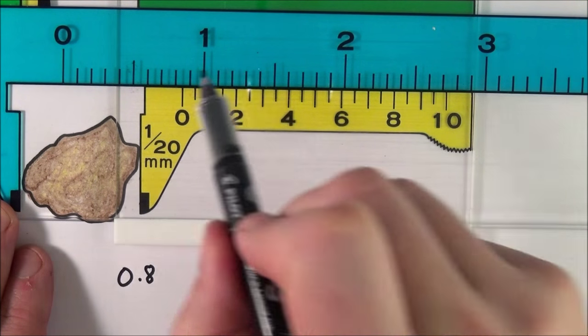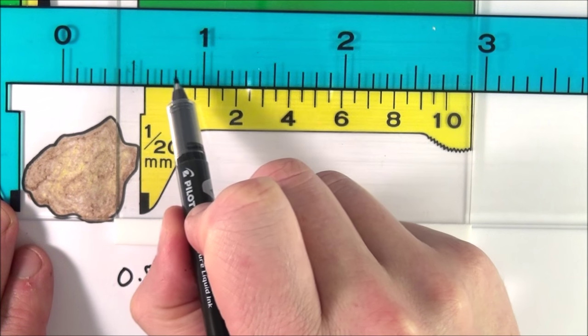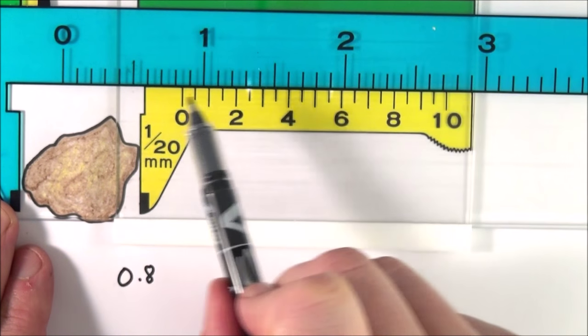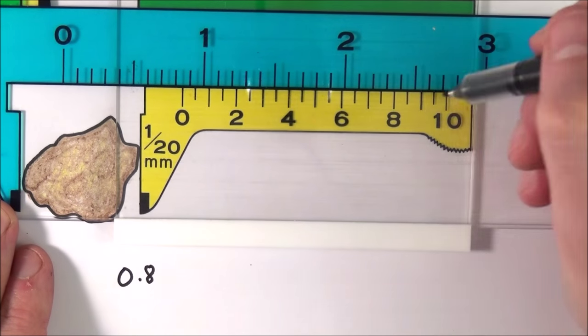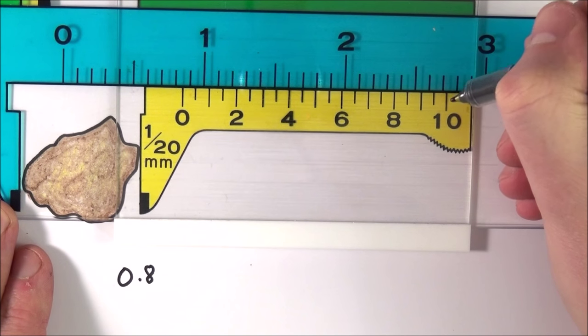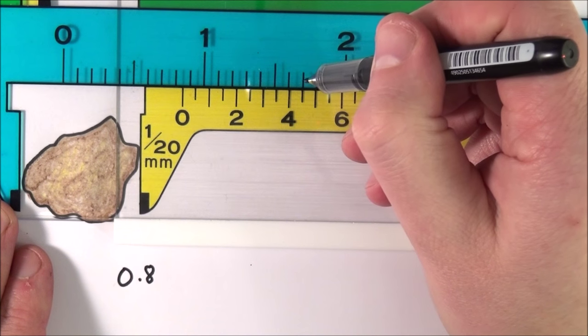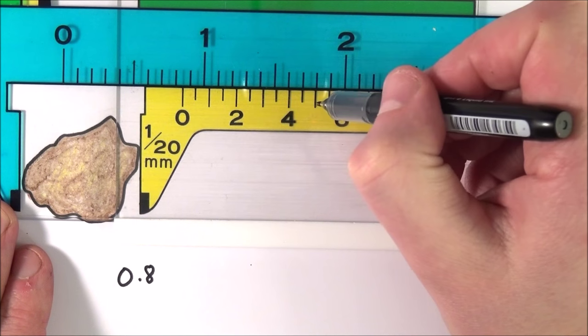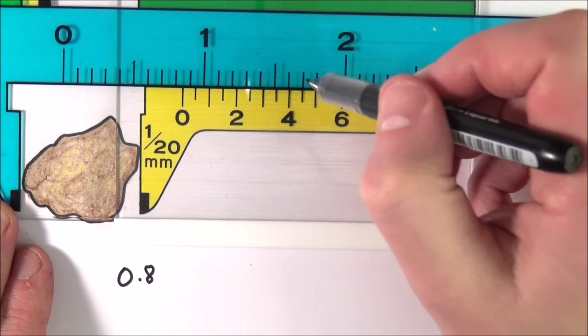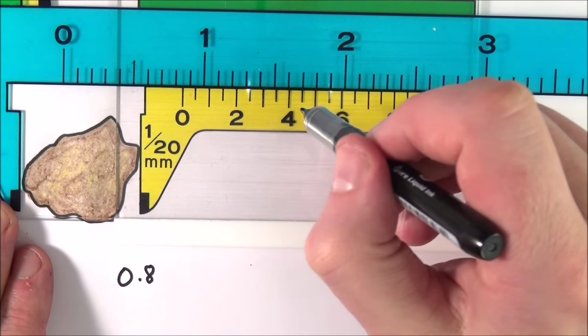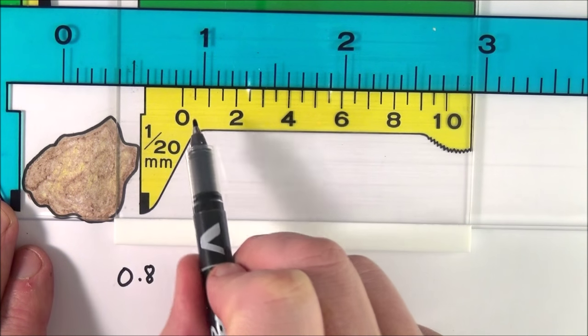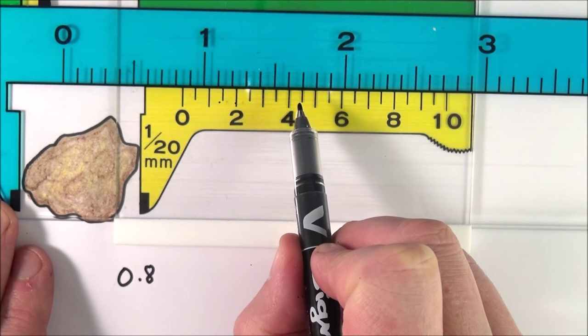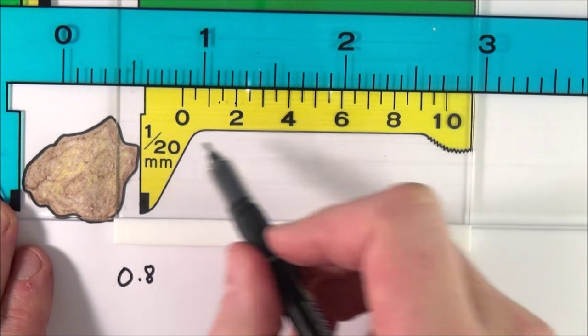Once we know which region this first marking is lying in, we need to look along the scale here to where these two lines actually line up. The lines that line up tend to line up around here somewhere, at this value between four and five. It's lining up at the place which is 0, 1, 2, 3, 4, 5, 6, 7, 8, 9—it's 9/20ths of a millimeter along.